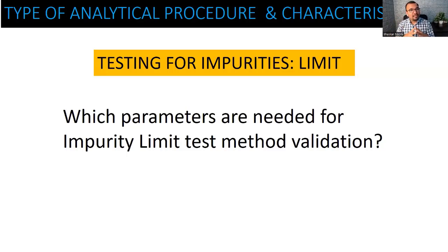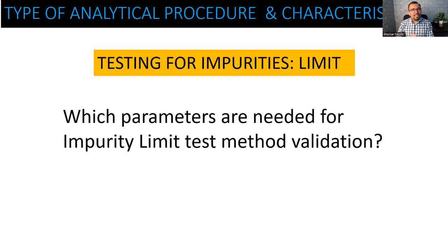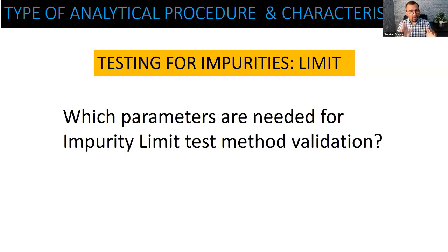As we said, for precision the quantitation is required. But in a limit test, there is going to be no quantitation. For a 10 ppm impurity limit, you will not report 8 ppm or 12 ppm — you will only say 'below 10 ppm' or 'above 10 ppm'. It is very difficult to understand the spread of the result. You are not able to calculate the standard deviation or the percent RSD. And hence, because of that limitation, the limit test may not have precision as a validation parameter.